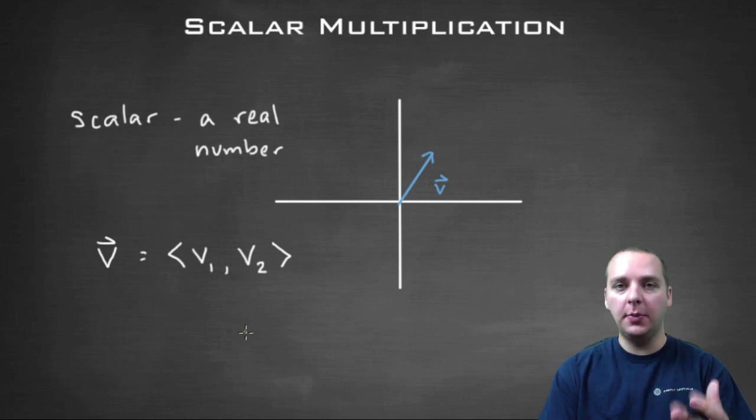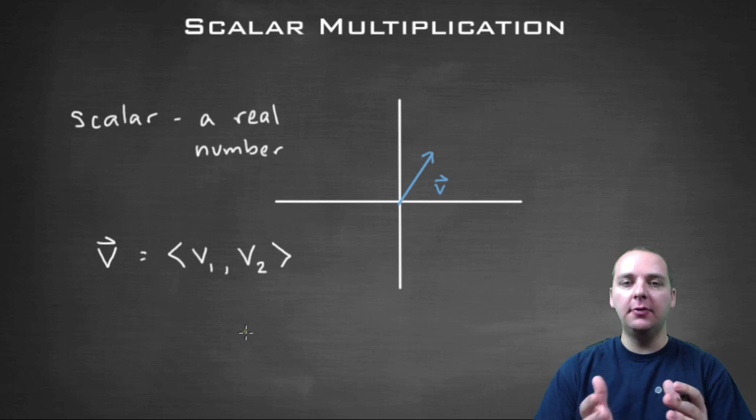Whenever we talk about vectors, we also wind up talking a lot about scalars as well. Scalars and vectors are always closely related to one another, and you usually don't talk about one without the other. Basically, a scalar is just a real number.